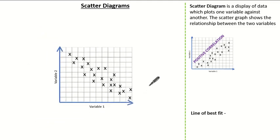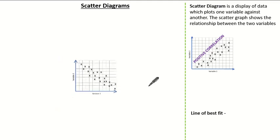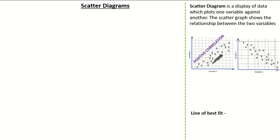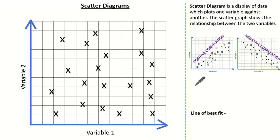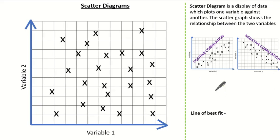Now we know what a positive correlation looks like and what a negative correlation looks like, let's have a look at our last scatter diagram. Here the way in which the data is scattered everywhere shows there is no correlation.